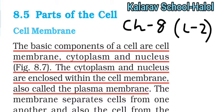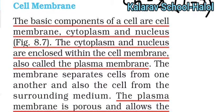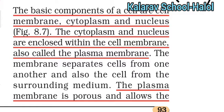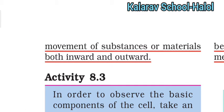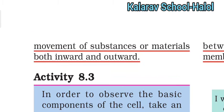The parts of the cell: number one is cell membrane. A cell contains a number of basic components — that is cell membrane, cytoplasm, and nucleus. Cytoplasm and nucleus are placed within the cell membrane, and together that is called the plasma membrane. The membrane separates cells from one another and also the cell from its surroundings. The plasma membrane is porous and allows the movement of substances both inward and outward, so it is a permeable membrane.